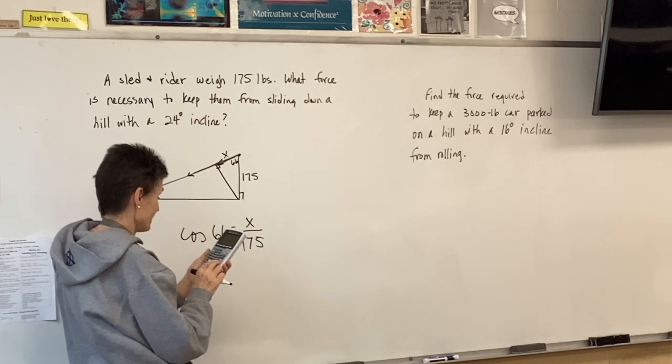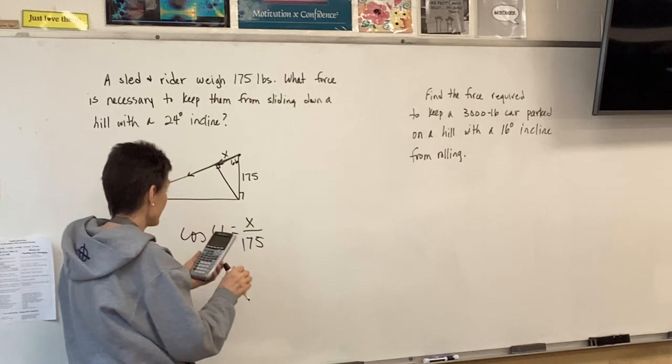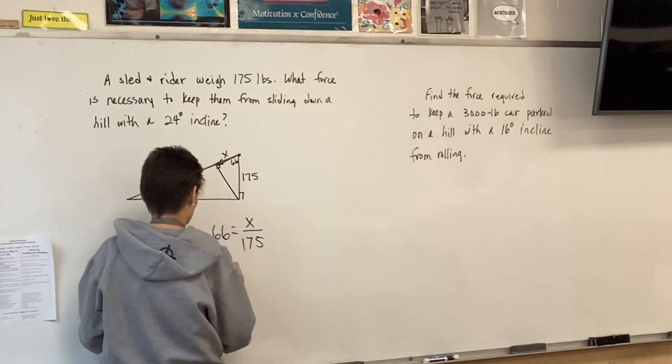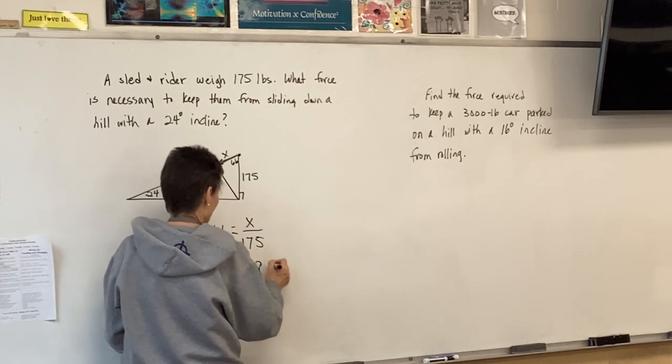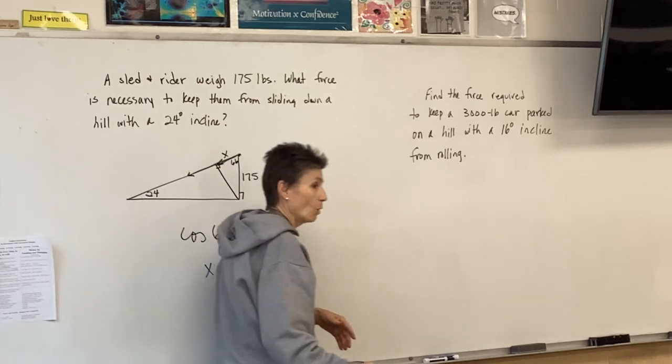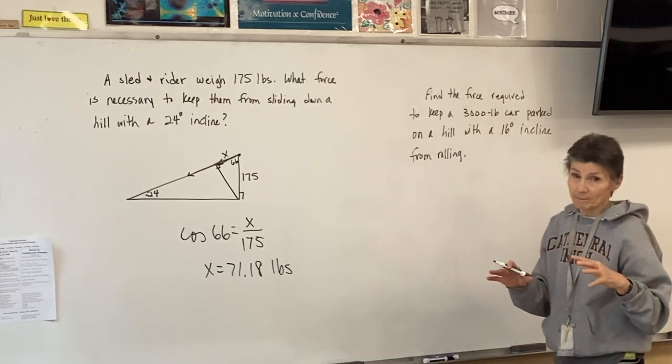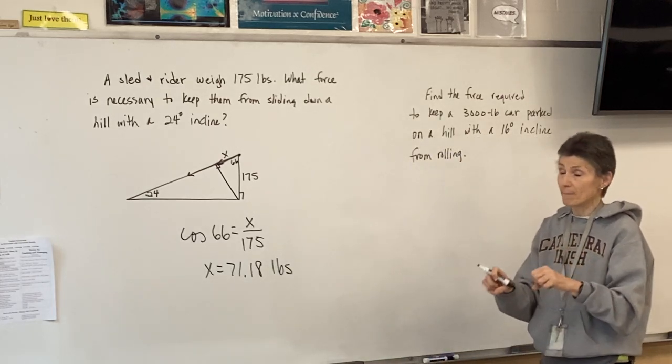175 cosine 66, make sure in degrees, and the answer is 71.18 pounds. So we would have to pull with 71 pounds of force to hold them stable, not pulling them, not moving them, just to hold them at the top of the hill so they didn't slide down.